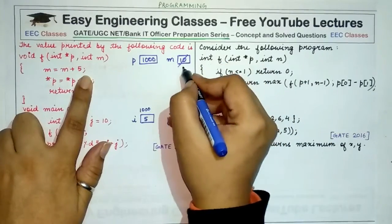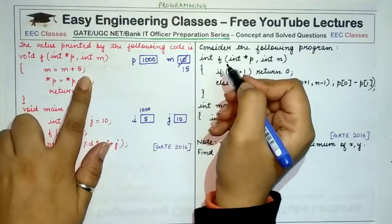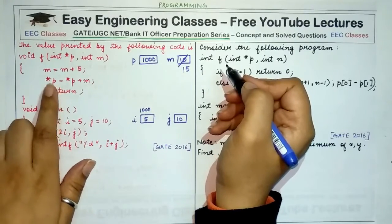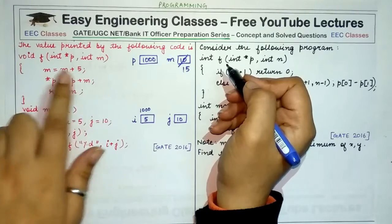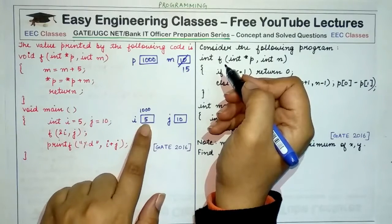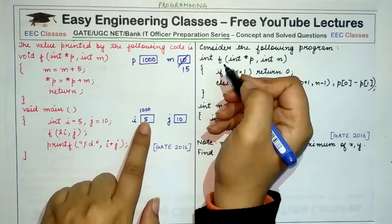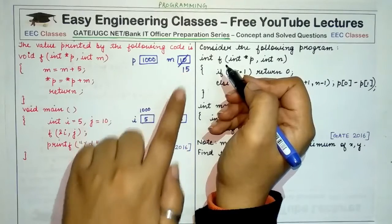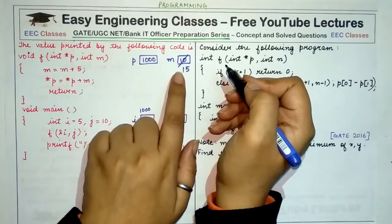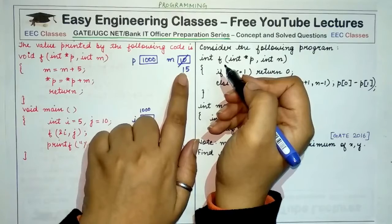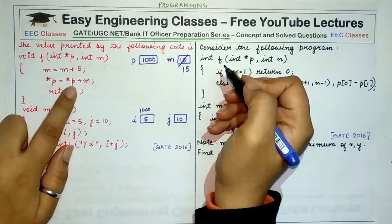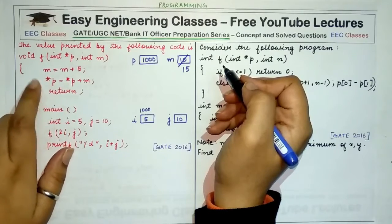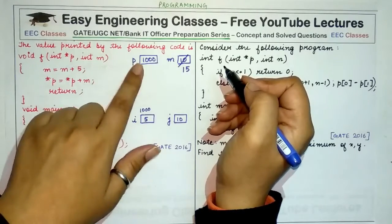The data at pointer p is also changed: it is equal to the current data of p plus m. Since p is pointing to i, the current data of i is 5, and 5 plus the value at m (which is 15) equals 20.